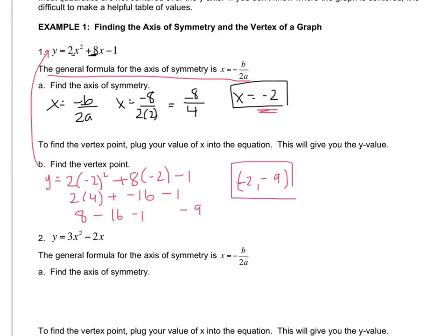So if I were to graph this, which they're not asking me to do, I would start my table, and my center would be at negative 2. So I would pick a couple of points around negative 2, and then this is going to end up being where that symmetry happens.